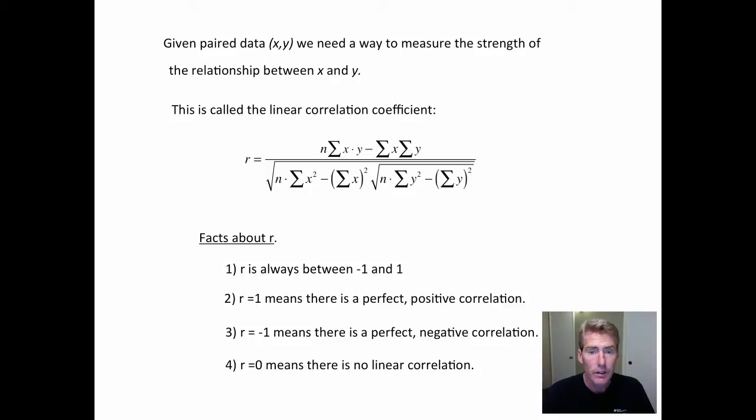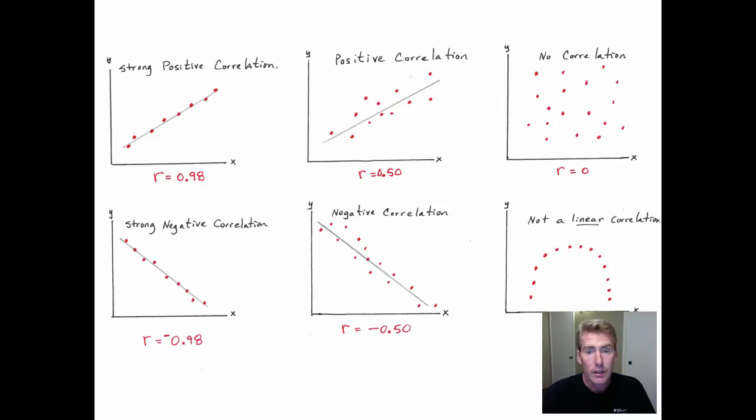Then if R equals negative one, it means there's a perfect negative correlation. The difference between positive correlation and negative correlation is that positive means positive slope, negative means negative slope. One has a line that's going up. The other has a line that's going down. And then if R equals zero or close to zero, that means that there's no linear correlation. Now this next slide has a lot on it, but it visually summarizes all of the possibilities.